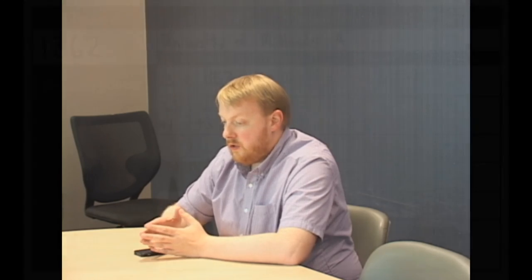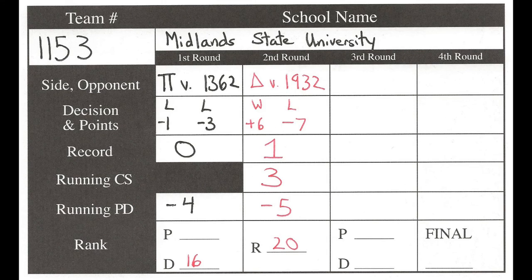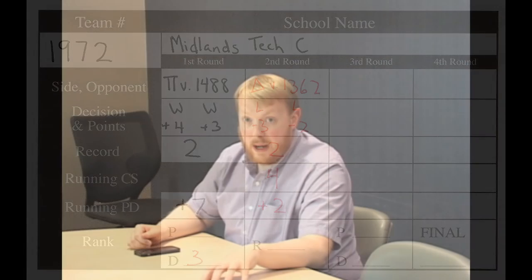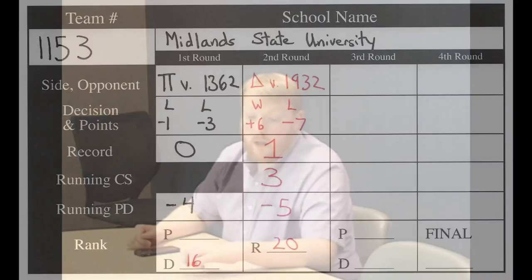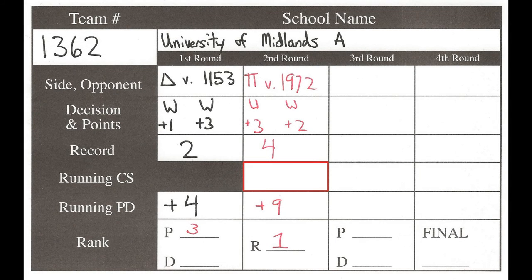Combined strength is simply the number of ballots that your opponents have won in the competition so far. For example, if your team faced team A in round one and team B in round two, you would look at how many ballots team A and team B combined have won. If team A won one ballot and team B won two ballots, your team's combined strength would be three.